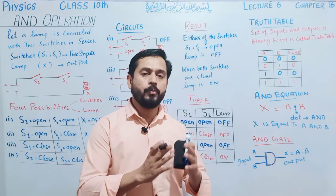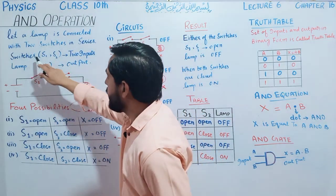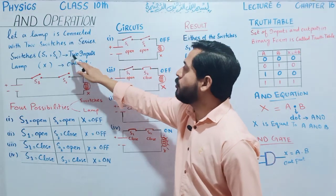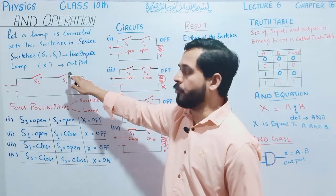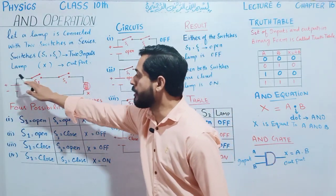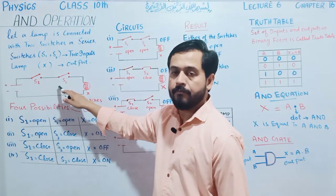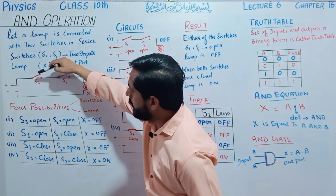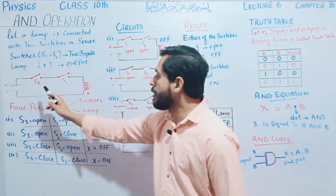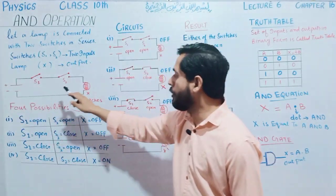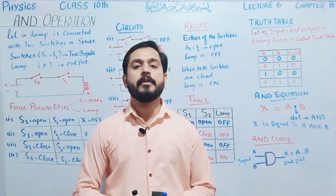A lamp is connected with two switches in series, which are S1 and S2. These are two inputs, while the lamp — named X — is our output. In this circuit, both switches S1 and S2 are currently open, meaning they are separate from each other. The battery is the electrical source, and the lamp is the output. For these two switches, there are four operational possibilities.